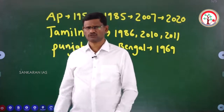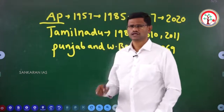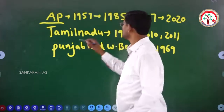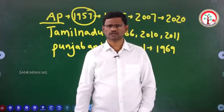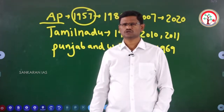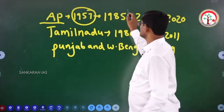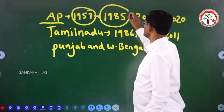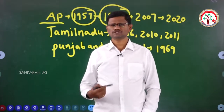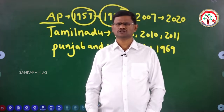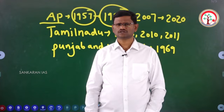If you take the story of Andhra Pradesh, a legislative council was created in the year 1957. Subsequently, it was abolished in 1985 when Mr. N.T. Ramarao was the chief minister of the state of Andhra Pradesh — the legislative council was abolished.